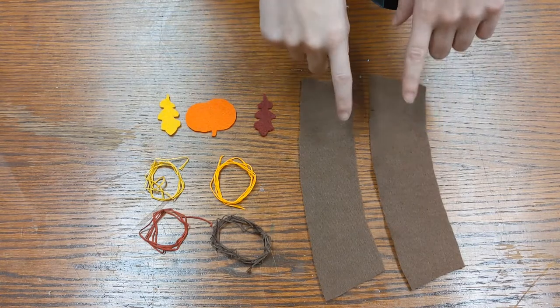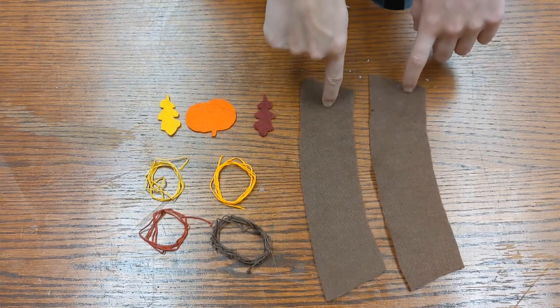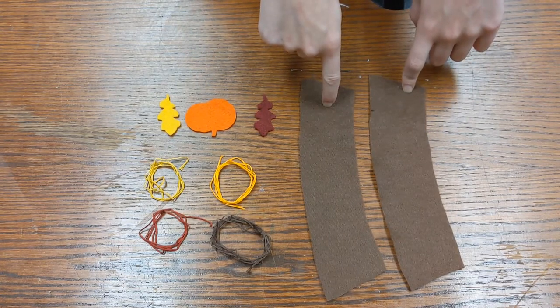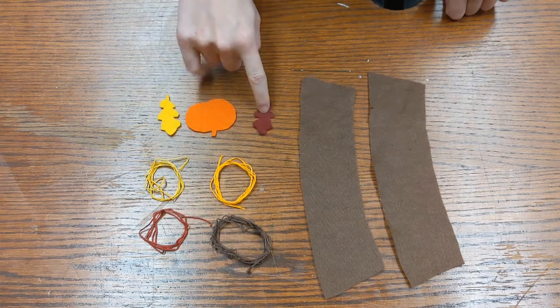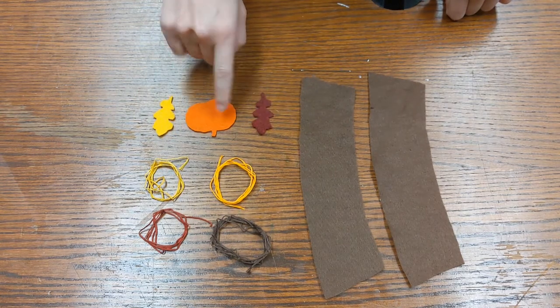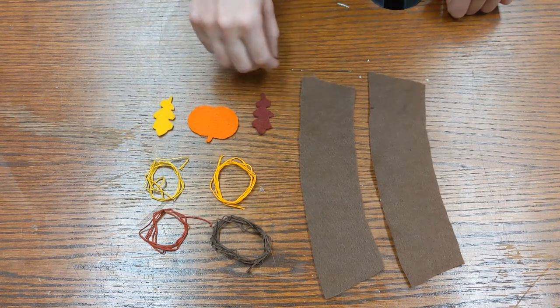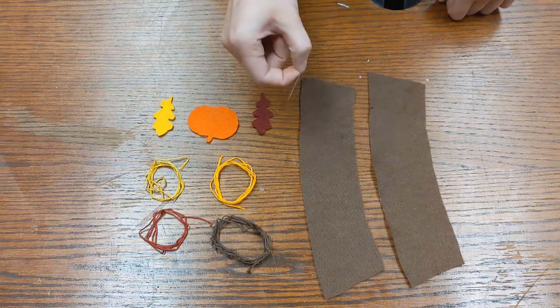So for your materials you'll have two pieces of either brown or dark orange felt, two leaves, one yellow, one burgundy, an orange pumpkin, and the four corresponding embroidery threads, and a needle.